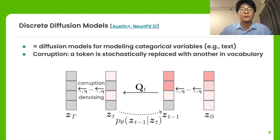Discrete diffusion models are for modeling the distribution of categorical variables such as text. Corruption is equipped with a predefined transition matrix, and the token is stochastically replaced with another in vocabulary.